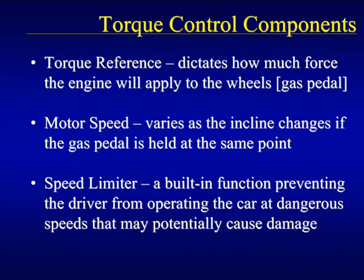Three important ideas can be drawn from this example. First, a torque reference is used to dictate how much force the engine will apply to the wheels. Second, motor speed acts in response to an incline or increased load — as the motor reaches a hill, the car slows down because the same amount of force is applied even though the load is increased. However, when more force is applied by the motor on flat ground, the car will begin to accelerate, because motor speed is dependent upon both motor force and inclination. Lastly, a speed limiter may be built into the car to prevent the driver from operating at dangerous speeds that may cause damage.